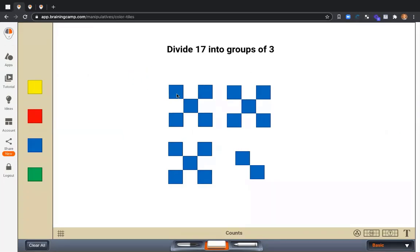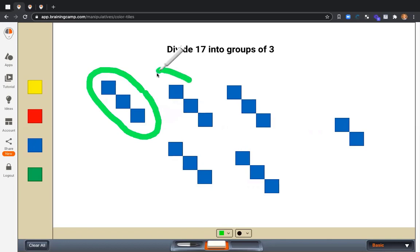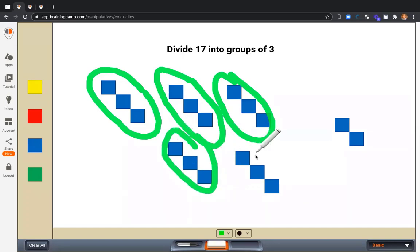So groups of 3. There's a 3 here and there's a 3 here and there's another 3. So when I start with 17 and I divide into groups of 3, we get 1, 2, 3, 4, 5. 17 divided by 3 equals 5. And I do have an amount left over here. It doesn't quite make a group of 3. So I would write 5 remainder 2.